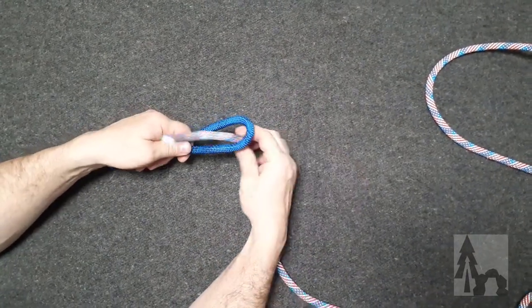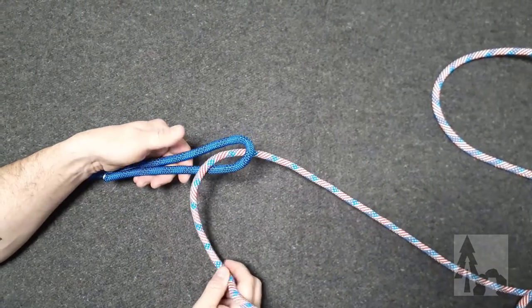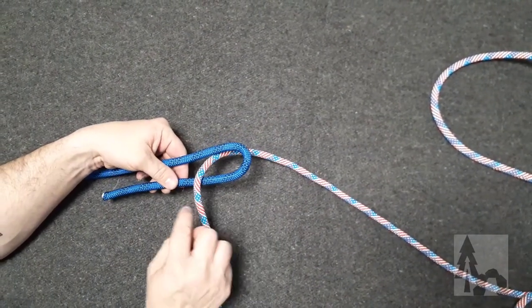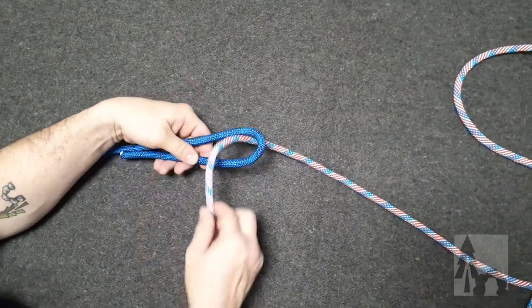I'm going to pass up through the bight from underneath or behind, and I'm going to turn toward myself. Now I keep the free end of my standing line I'm tying to toward me, and I turn toward me when I tie my sheet bend.